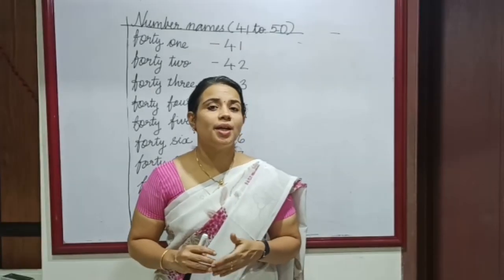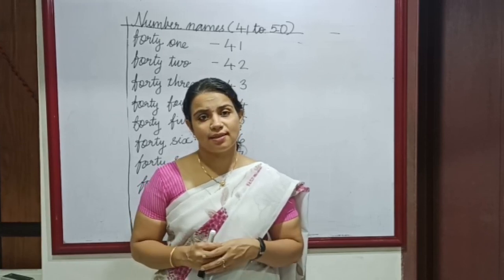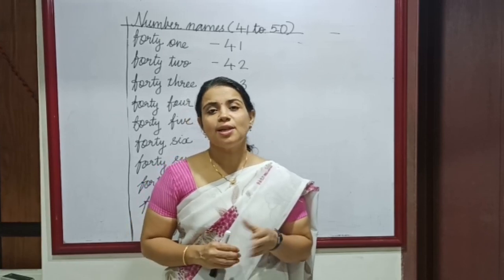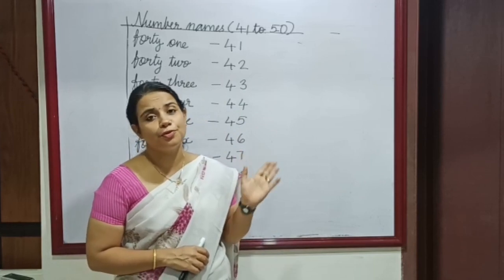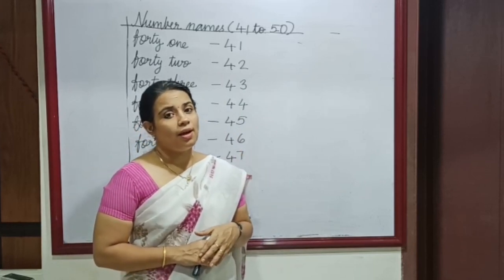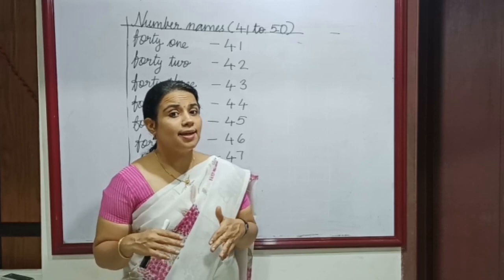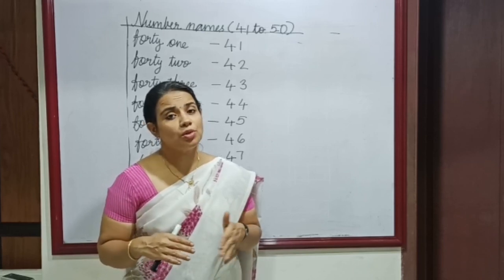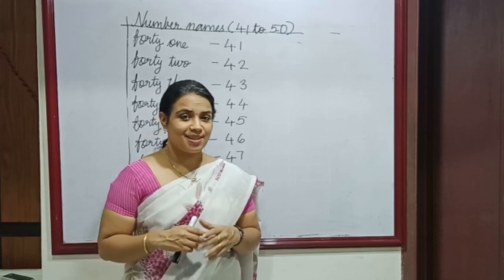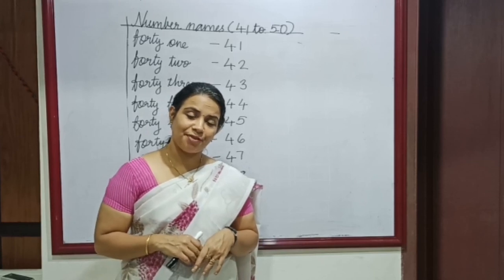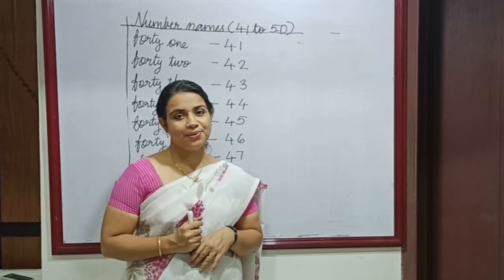I hope you got an idea about number names and tens and ones. You are supposed to write number names from 21 to 50 in your notebook. After that, write and study number names in your rough book. Stay home, stay safe. Bye, thank you.